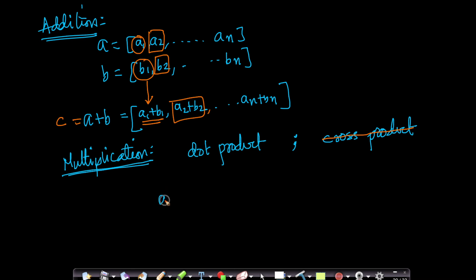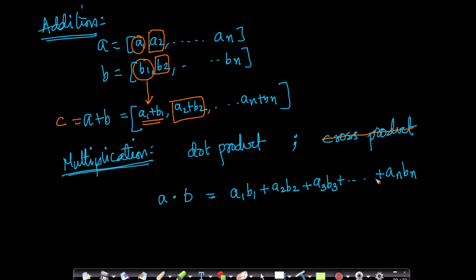If I have two vectors a and b, the dot product is written as a dot b. It is component-wise multiplication followed by summation: a dot b equals a1 times b1 plus a2 times b2 plus a3 times b3, and so on up to an times bn. Just take it as notation for now — I promise to connect it with geometry very soon.